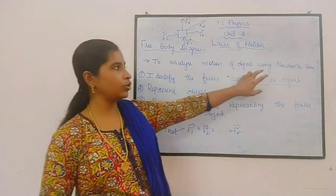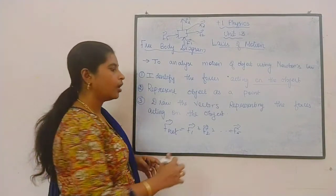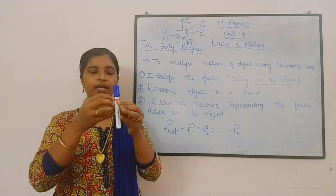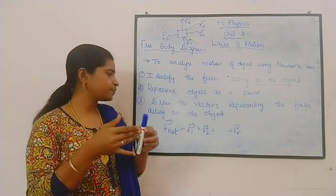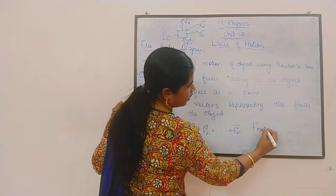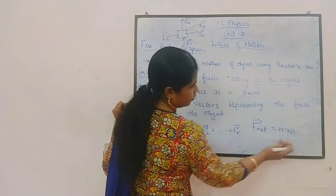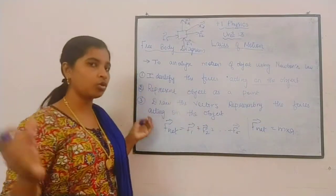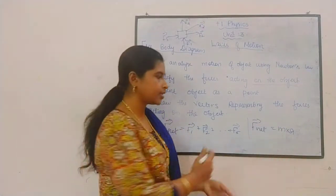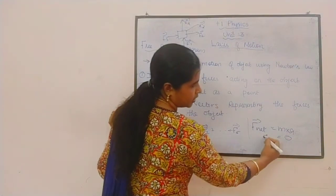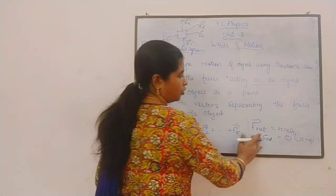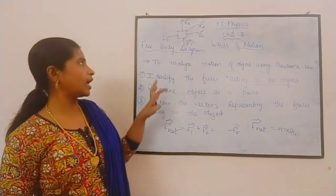According to Newton's second law, we calculate if there is acceleration. The net force is equal to mass times acceleration. If this body is moving, I have to find out the net force acting on it. The net force equals mass into acceleration. If there is no acceleration, the net force becomes zero. If acceleration is equal to zero, there is no net force. These are the three simple steps to apply the free body diagram.